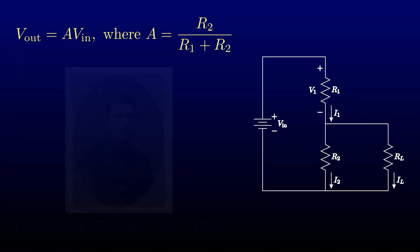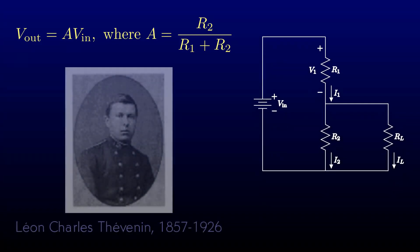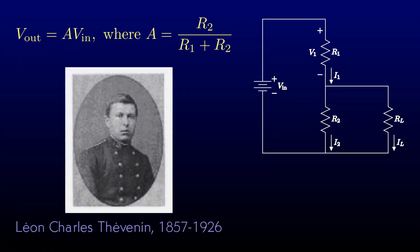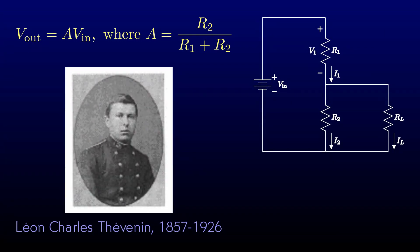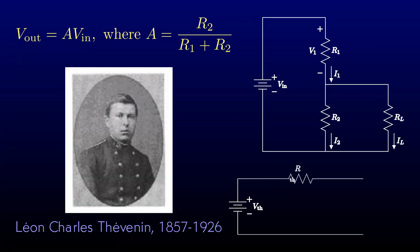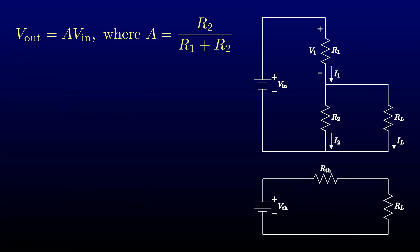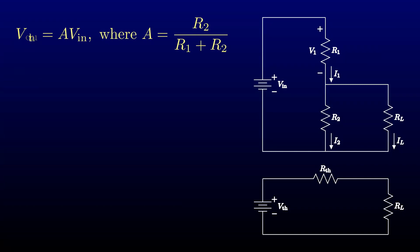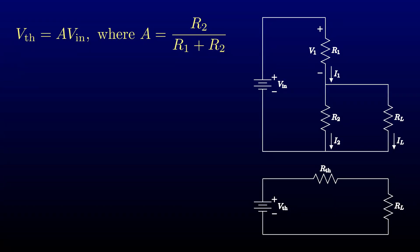To see what happens if the output is driving another resistor, let's invoke a result called Thevenin's theorem. Thevenin's theorem states that any network of resistors, voltage sources, and current sources can be replaced with a single voltage source in series with a single resistor. Whatever load you give it, it'll behave the same way as the original. So what are this voltage and this resistance? Well, we've computed the voltage already — it's just the open circuit output voltage of the original network.